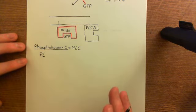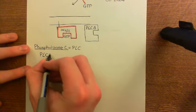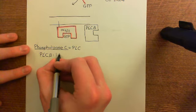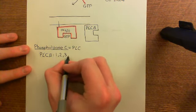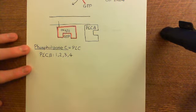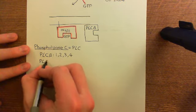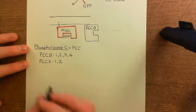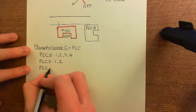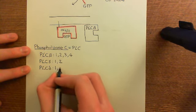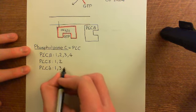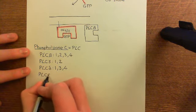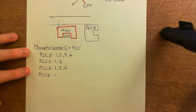Phospholipase C enzymes are grouped into families. The first is the phospholipase C beta family, containing four genes: phospholipase C beta 1, beta 2, beta 3, and beta 4. The next family is the phospholipase C gamma family, containing two genes: gamma 1 and gamma 2. Next is the phospholipase C delta family, containing three genes: delta 1, delta 3, and delta 4. Then the phospholipase C epsilon family, containing just one gene: epsilon 1.